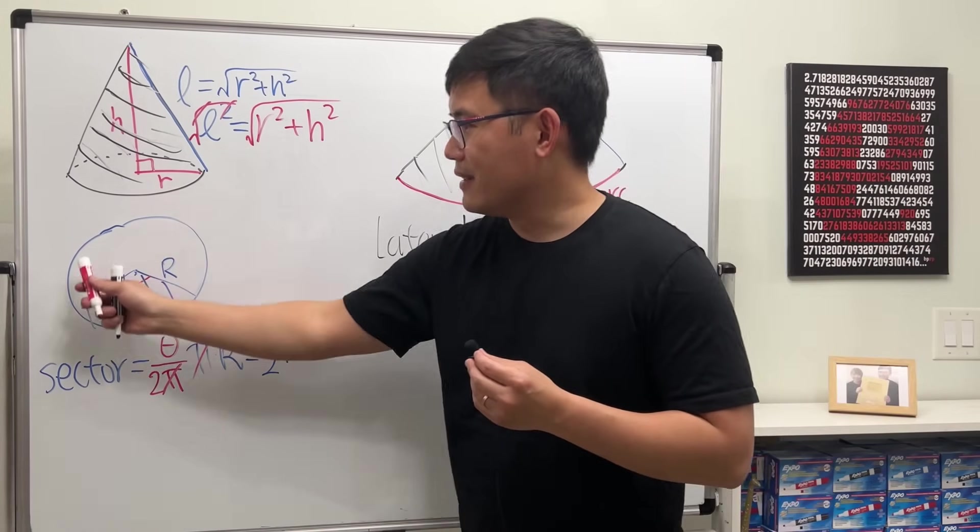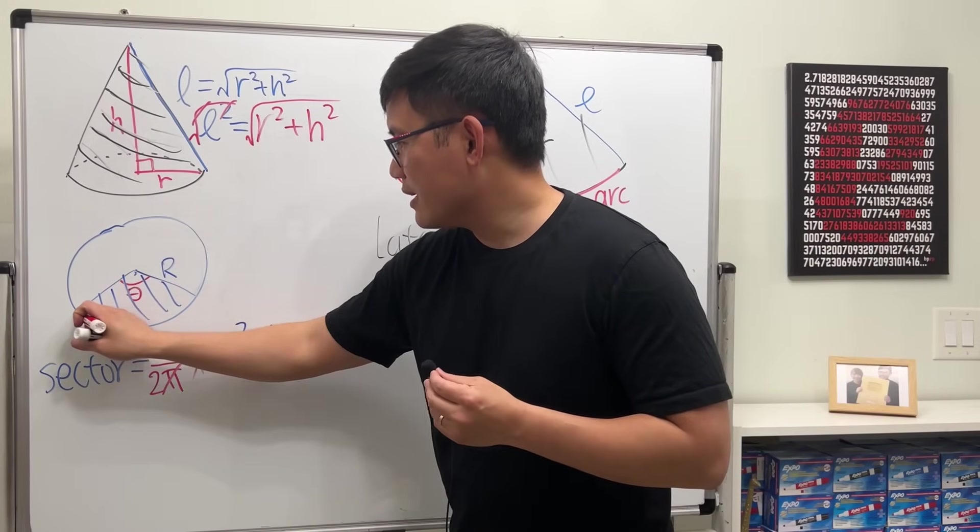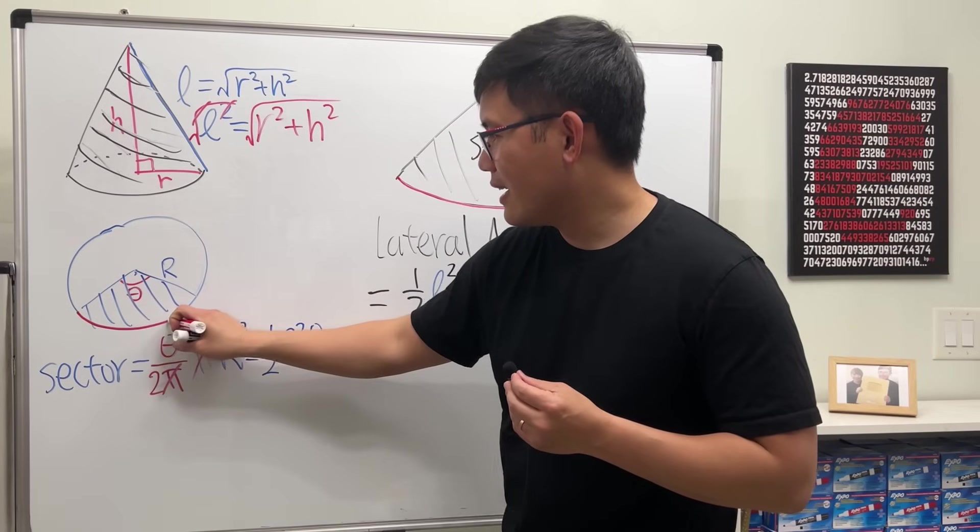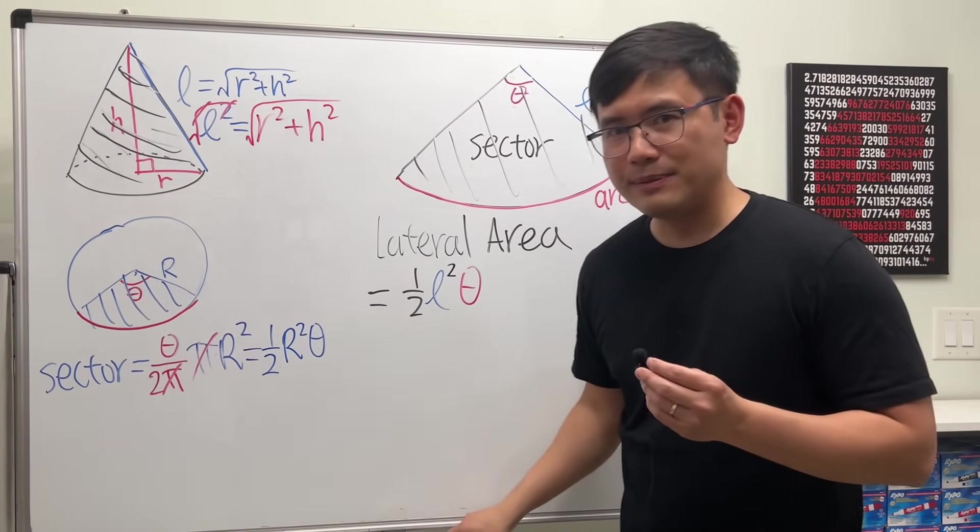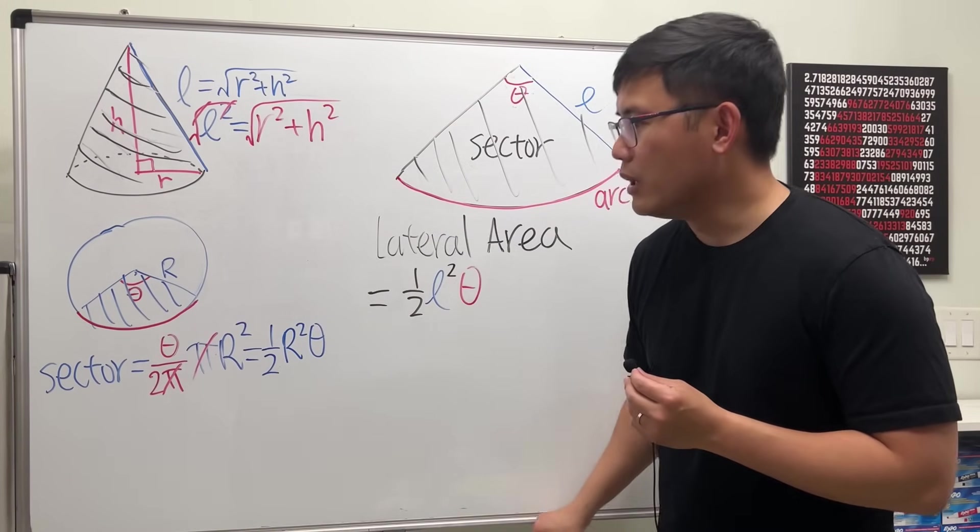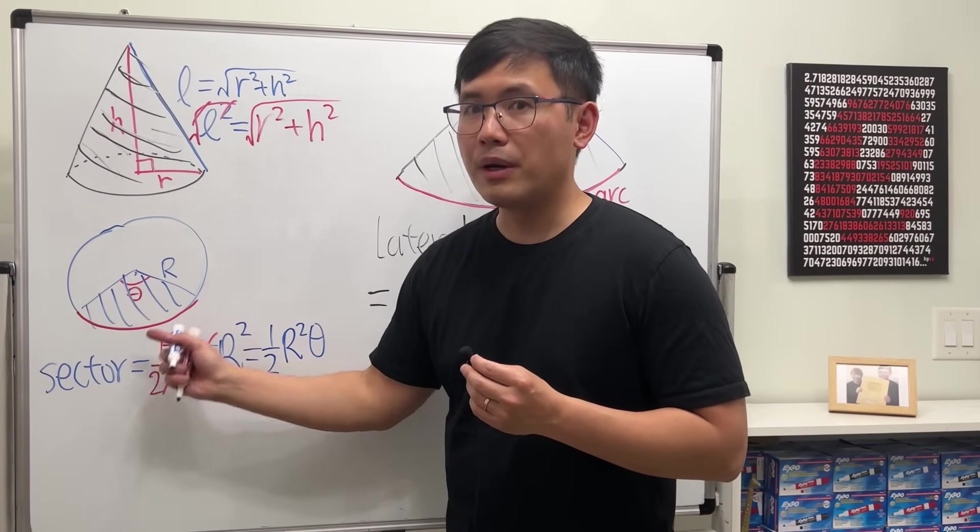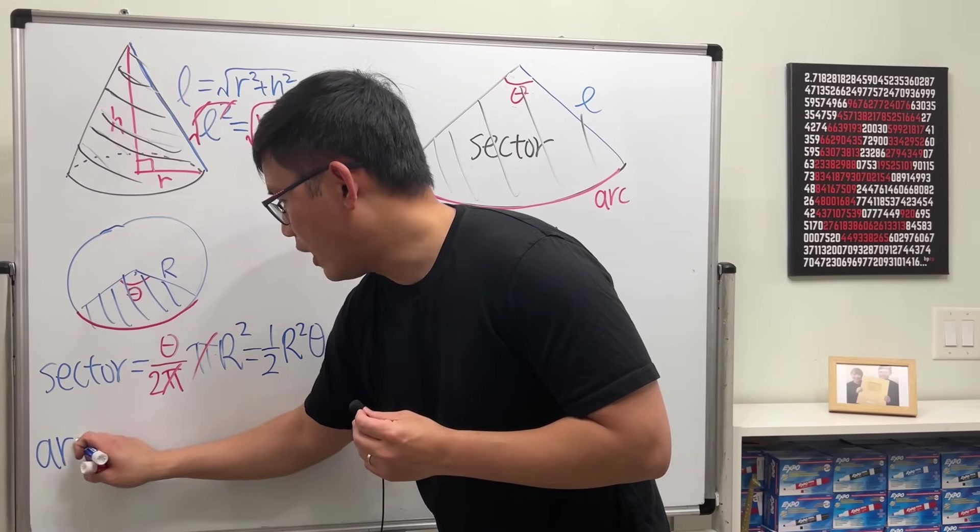this right here, again, it's just a small portion of the whole circle, but in that case we will be talking about the circumference. So for the arc, again, depending on this angle, divided by 2 pi, and we multiply by the whole circumference,